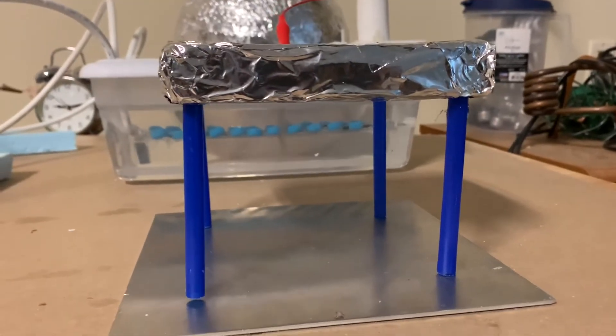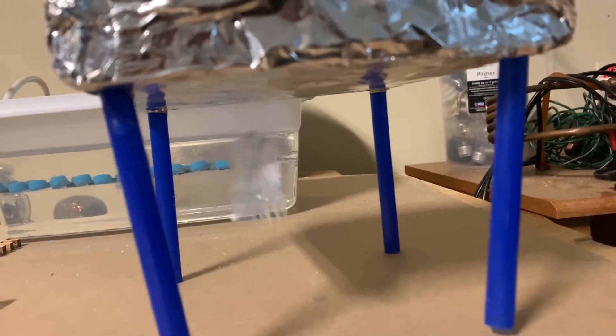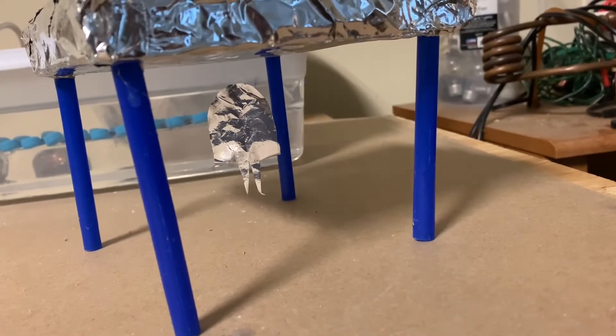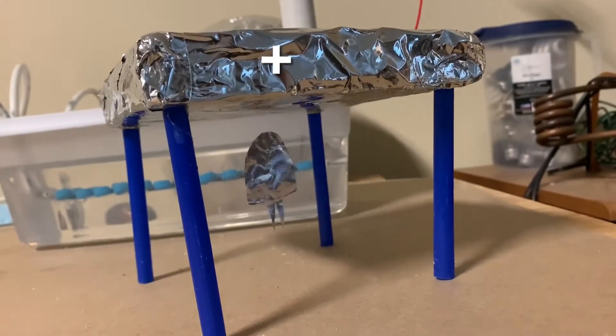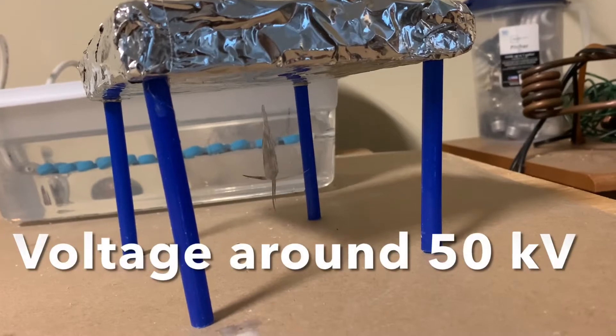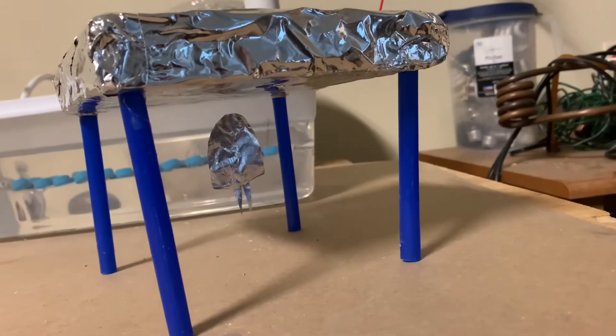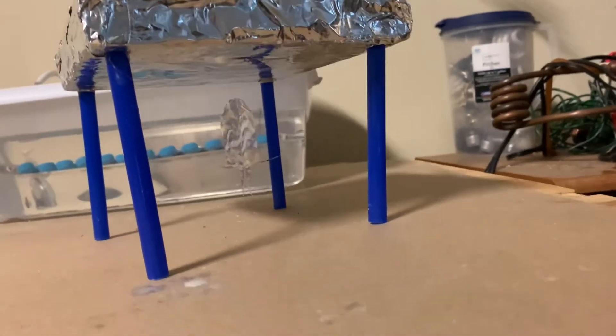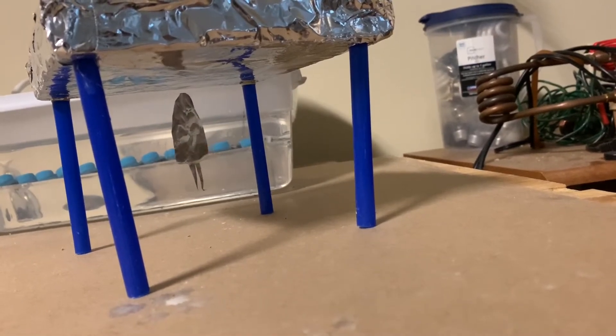By changing the voltage, I can change the height. Top plate is positive. It just kind of floats there. If I make the voltage go up a little bit, watch what happens - it moves down. Very stable so far.